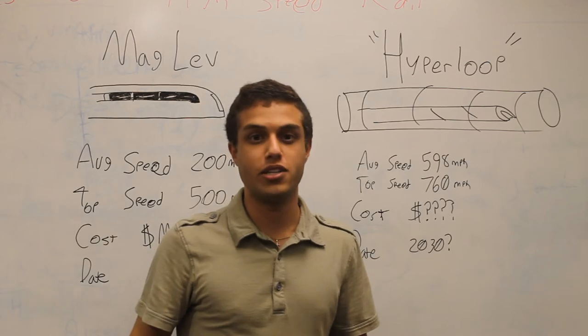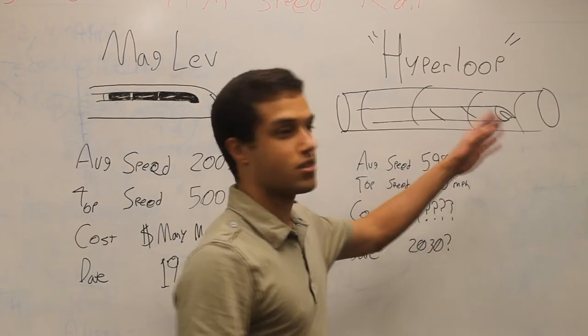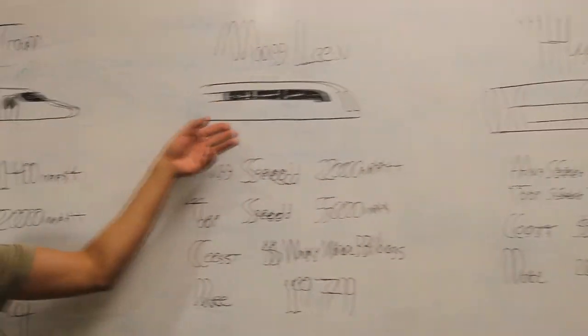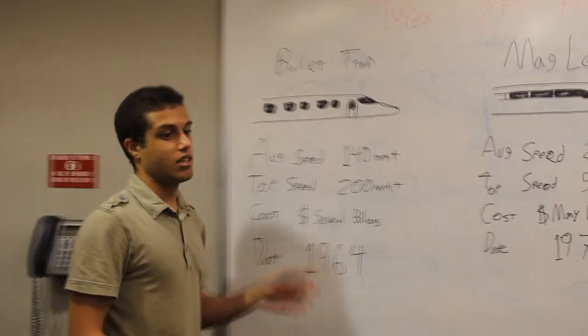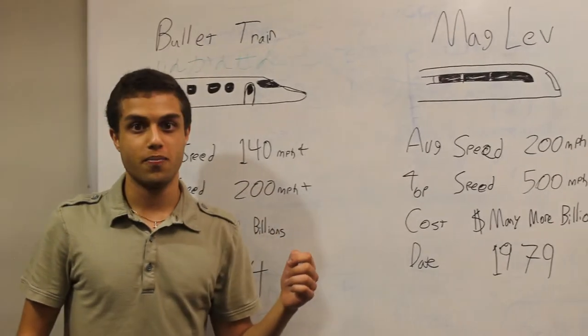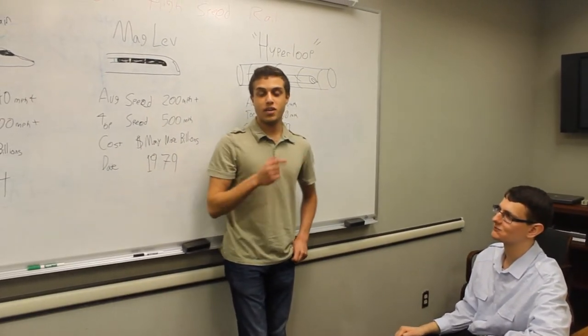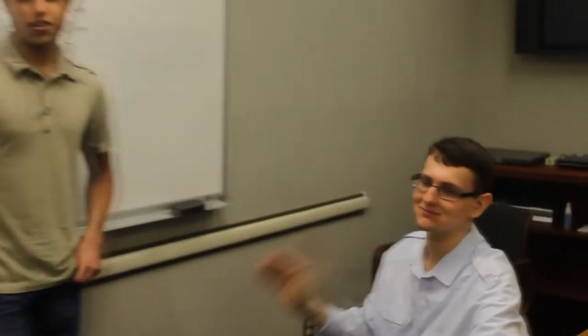But can it actually work? That's something we'll have to figure out later. As of right now, it's something that doesn't even exist. As of what we have here, the maglev and the bullet train, these actually exist in high speed rail. So Alex here, he's the VP of High Speed Rail America Club. Say hello Alex. Hi.